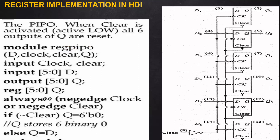Inside this module, the parameters are d, clock, clear, and q. The inputs are d and clock, where d is an array of size 0 to 5 — a total of 6 bits. The output q is of the same size, 6 bits (0 to 5).